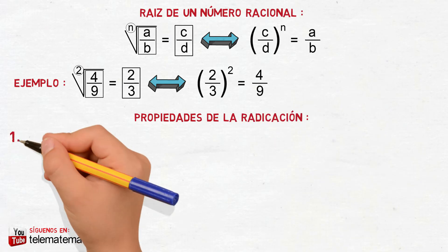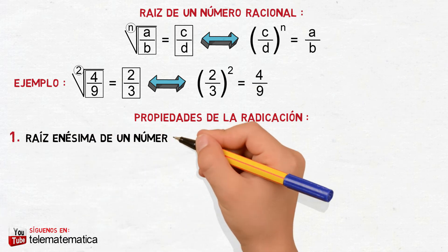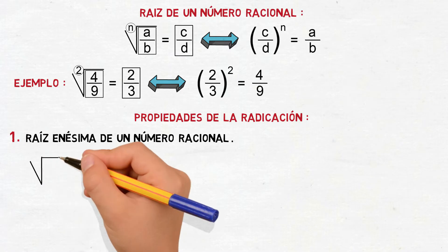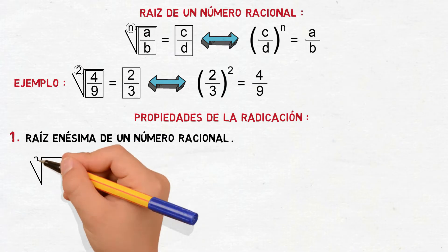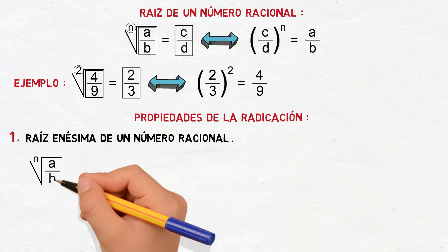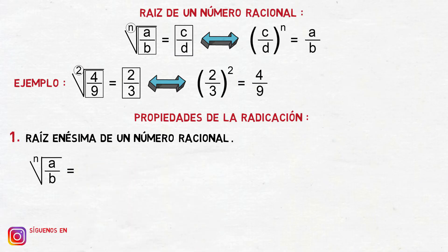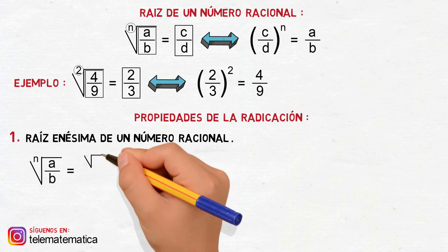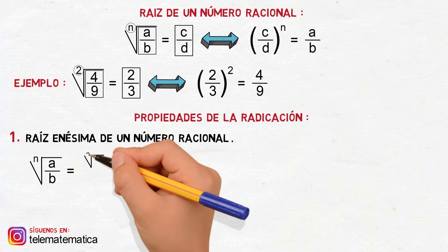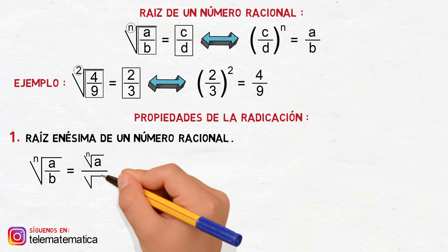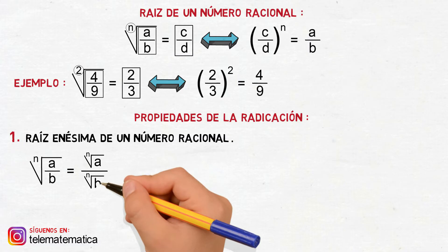Primera propiedad: raíz enésima de un número racional. Se define como raíz enésima de A dividido para B va a ser igual a la raíz enésima del elemento A dividido a la raíz enésima del elemento B.